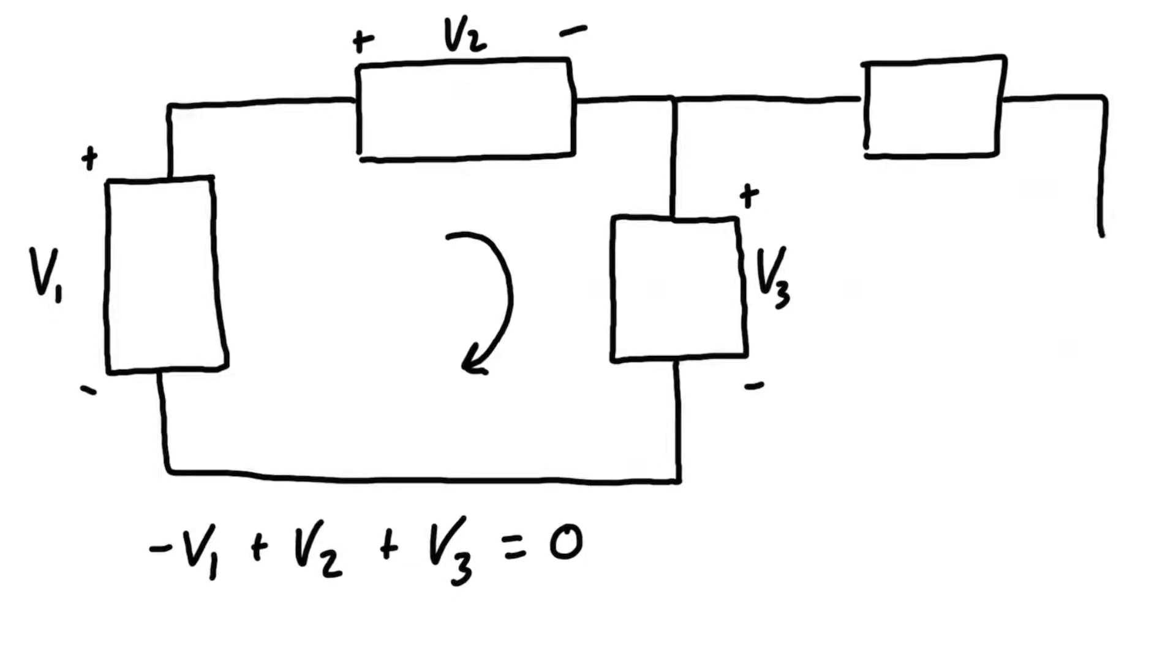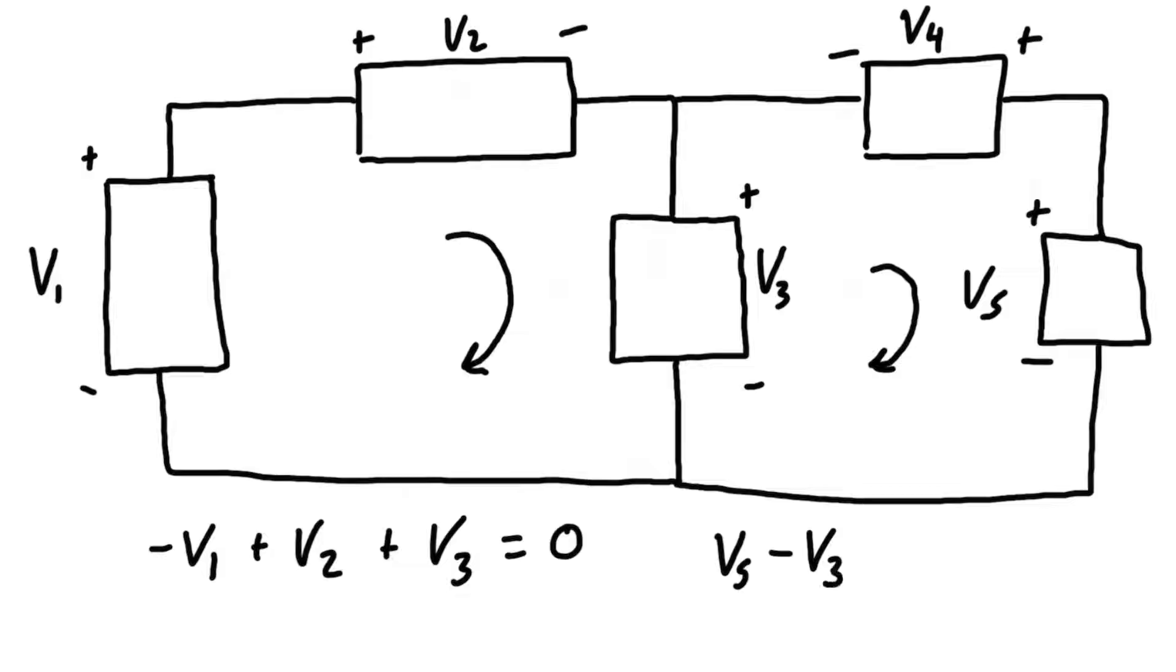Let's draw another branch. If we had say v4 and v5, then when we go around this loop we would enter v5 through the positive terminal so we have positive v5, then we enter v3 through the negative terminal so we have minus v3, and then minus v4 because we enter through the negative terminal when we're going this consistent direction around the loop.